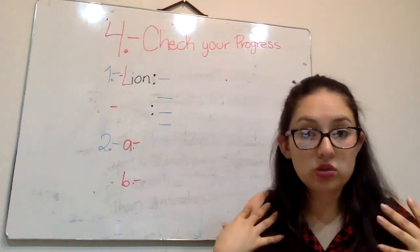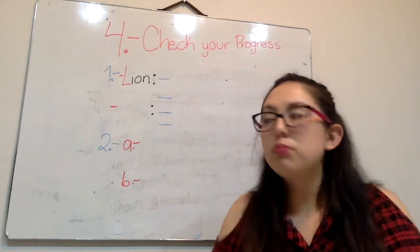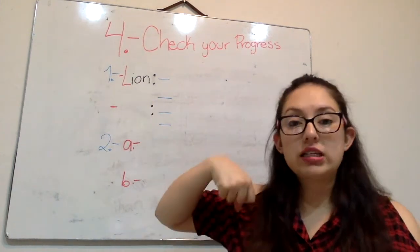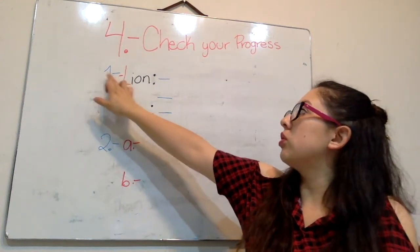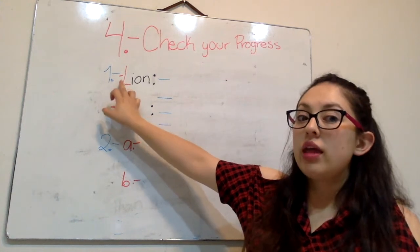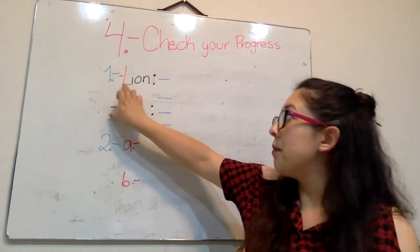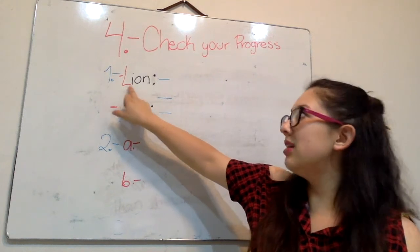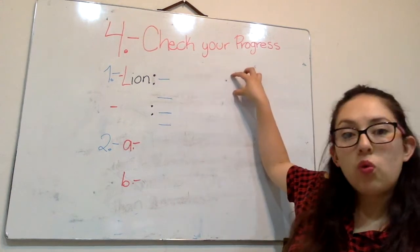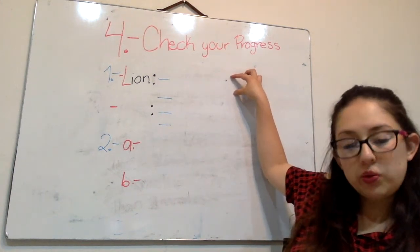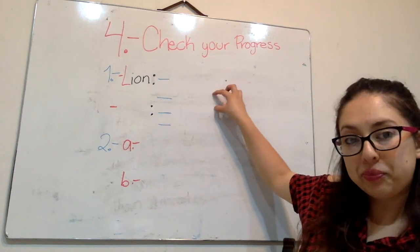Yo puse un ejemplo, no sé si está bien, ustedes lo sabrán, y puse a lion. Entonces esto solo es un ejemplo, chicos. Pongo número uno, letra a, slash con mis mayúsculas lion, dos puntos, en una línea voy a escribir una razón por la que tiene un buen olfato, y en la línea abajo otra.